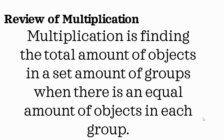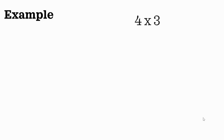Let's quickly review multiplication. We know multiplication is finding the total amount of objects in a set amount of groups when there's an equal amount of objects in each group. So for example, here we have 4 times 3. That means we have 4 groups with 3 objects in each group.